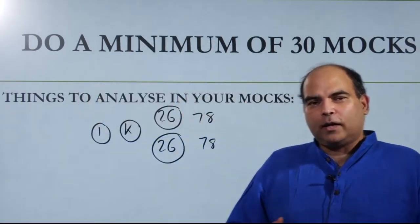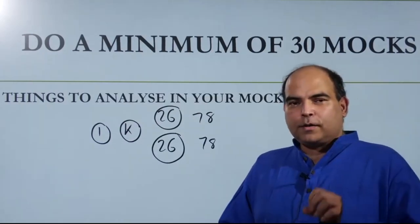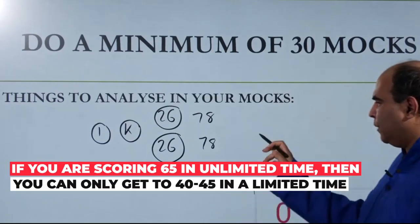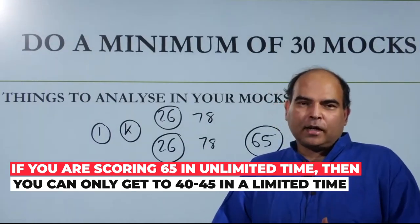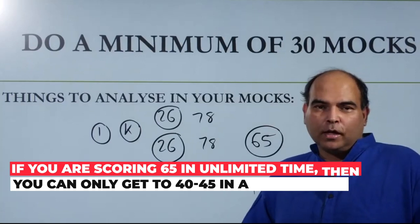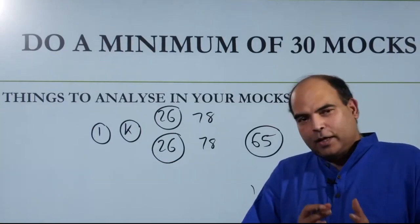Do you have the knowledge to get there? If there's no time limit on a 78 marks test, can you score 60 or 65? If your knowledge score is 65 out of 78, then in a 40 minute framework with time constraints, you cannot be expected to score more than 40 to 45 marks.